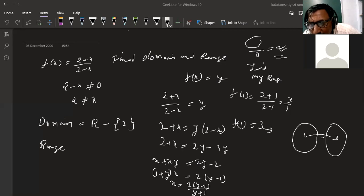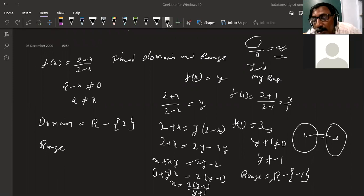The denominator can never be zero. y plus 1 is not equal to 0, so y is not equal to minus 1. Therefore, the range is equal to R minus {-1}, which is all real numbers except -1.